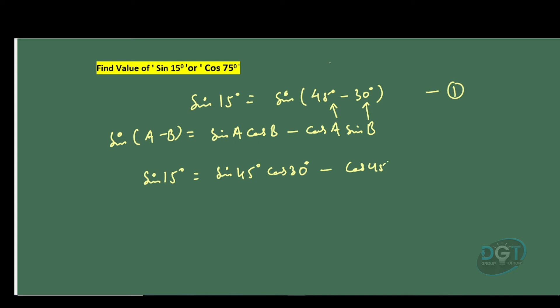Now, since 45° and 30° are standard angles, we know their values. Thus, sin 45° is 1/√2, cos 30° is √3/2, cos 45° is 1/√2, and sin 30° is 1/2. On simplification, we'll get √3/(2√2)